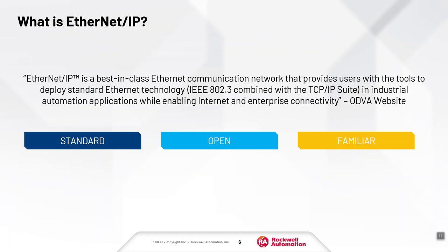We thought it would be helpful to start by defining what Ethernet IP is. Ethernet IP is the communication protocol that Rockwell has standardized on for their hardware and software, and we use a combination of Ethernet IP services in a majority of our technology. Ethernet IP is considered a best-in-class Ethernet communication network that provides users with tools to deploy standard Ethernet technology in industrial automation applications. Think of Ethernet IP as an open standard supported by ODVA — it can be leveraged by anyone in industrial automation or outside of it, which is one of the most compelling reasons Rockwell Automation leverages it.